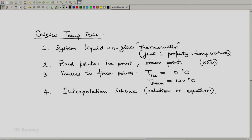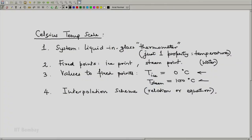Anything you change among these and you will get a distinctly different temperature scale. For example, instead of the ice point being 0°C, we may decide it to be 50 degrees — 50 degrees new Celsius. The steam point could be 475 on the new Celsius scale; nothing wrong in it. Another scale very similar to this is the Fahrenheit scale, where the ice point is 32°F and the steam point is 212°F — just a difference in the definition of ice points and a corresponding change in the interpolation scheme.